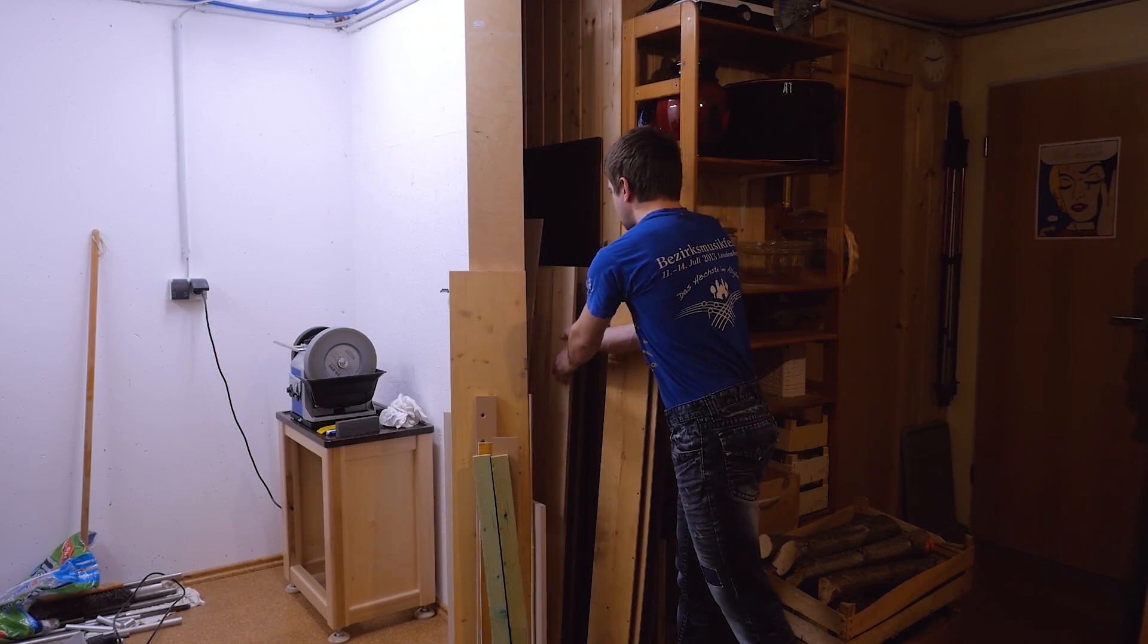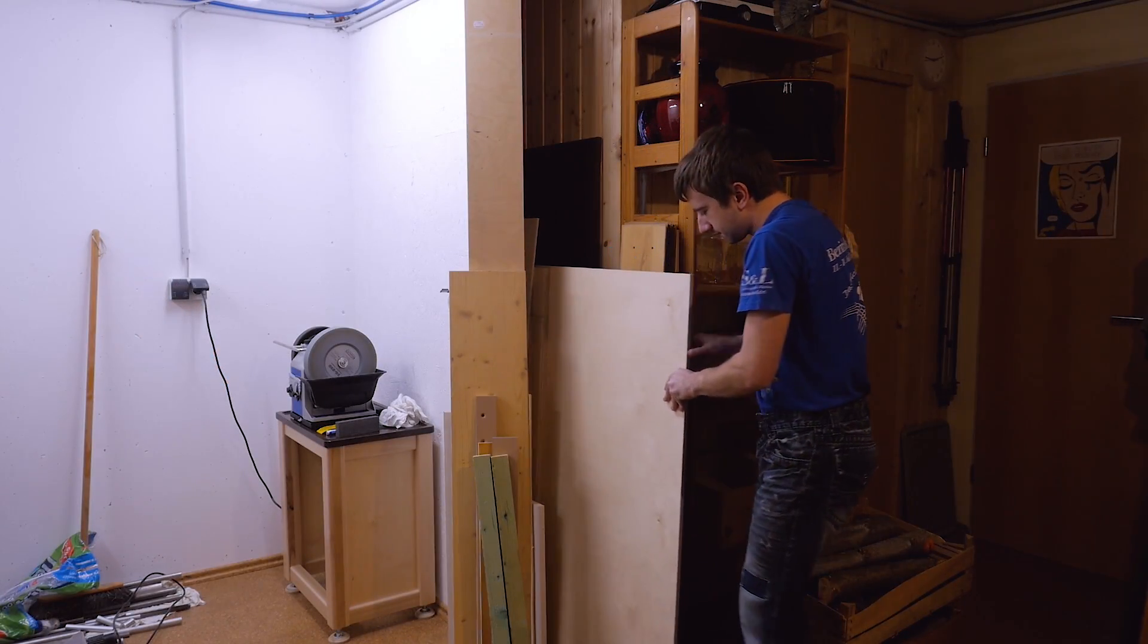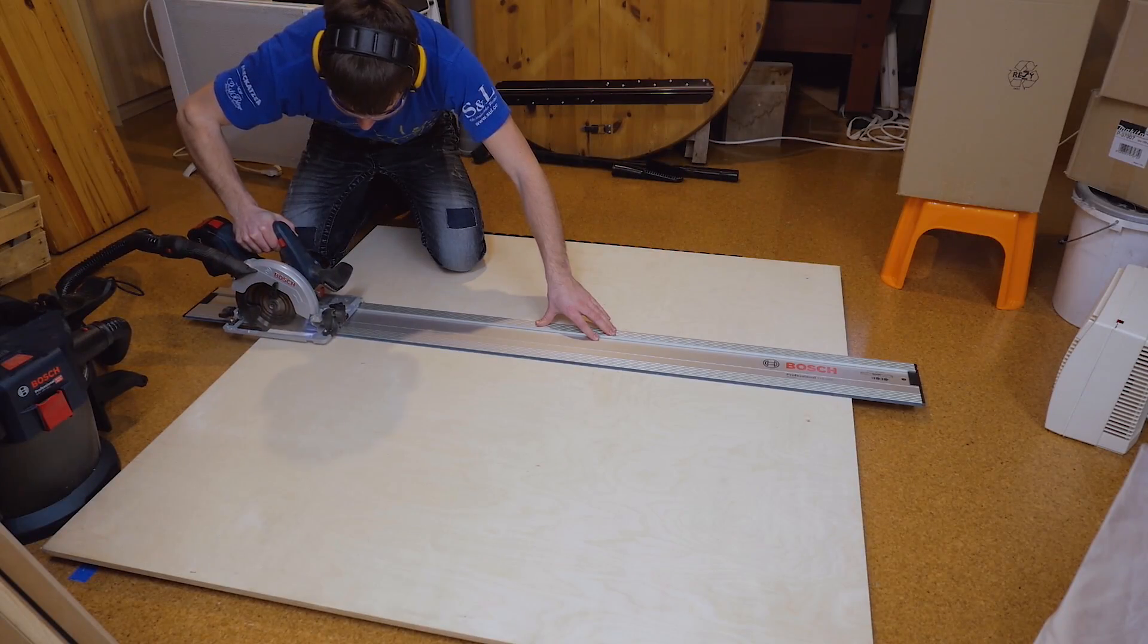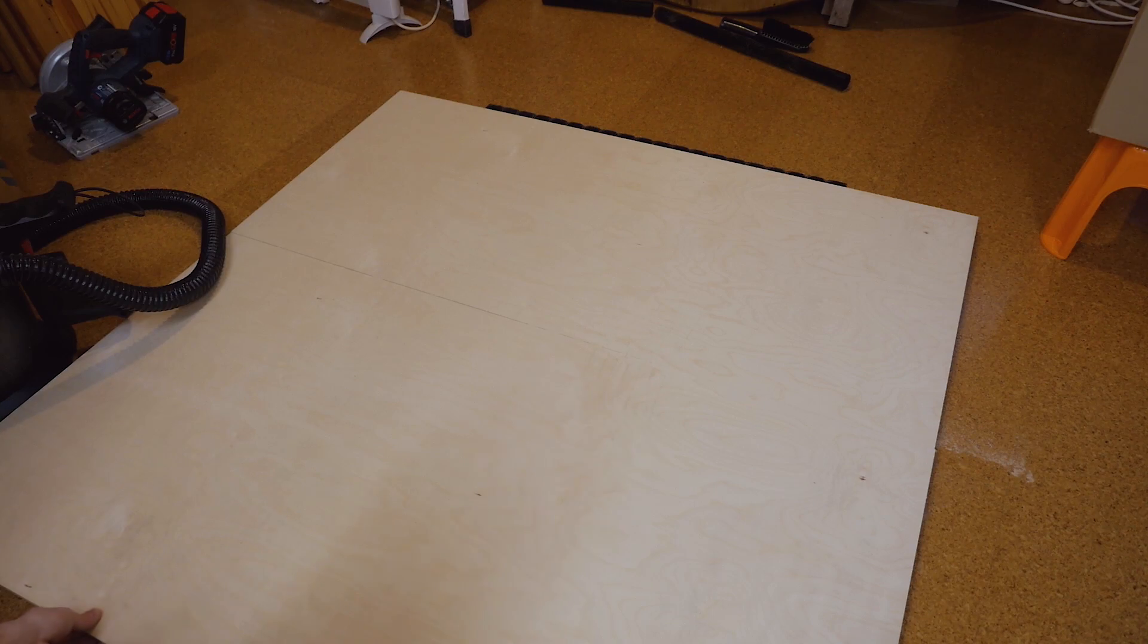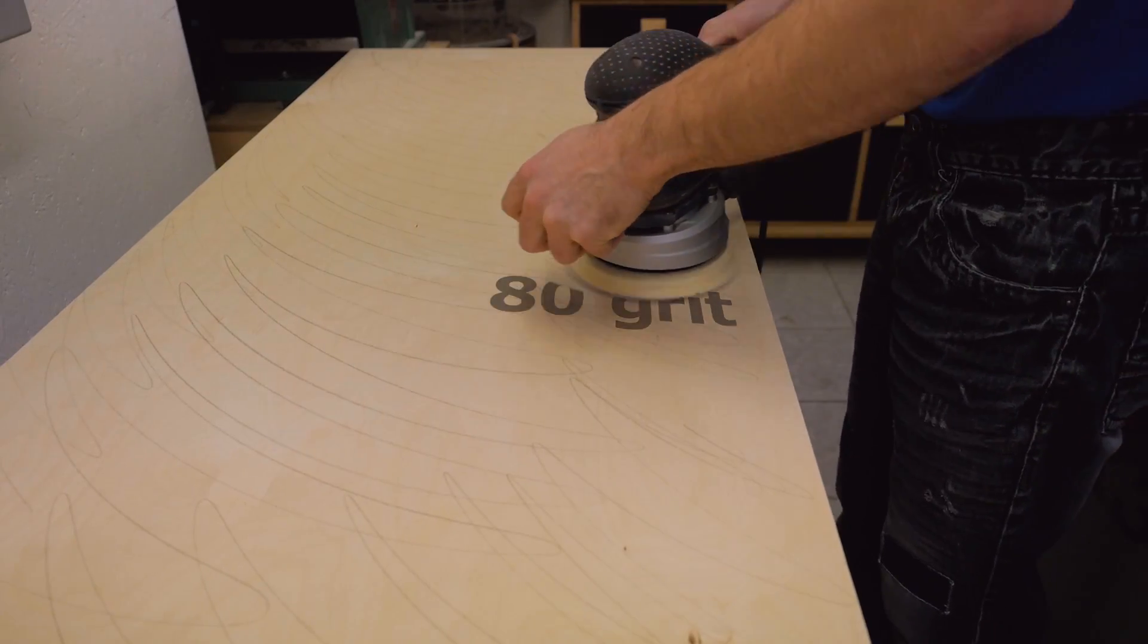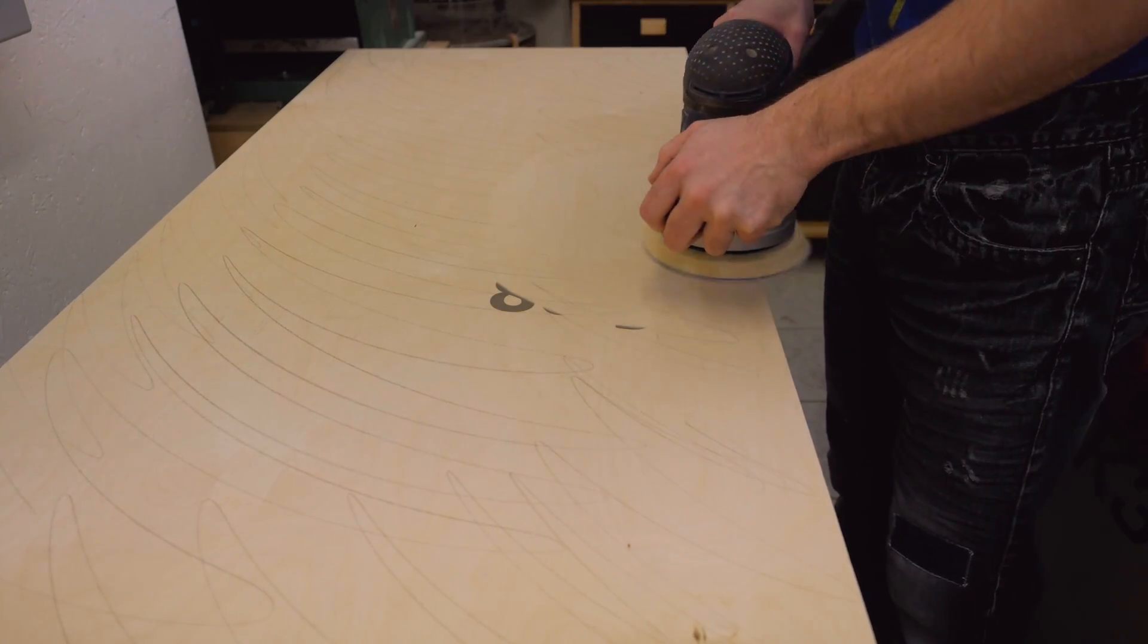For the material I'm using 12 millimeter birch plywood. After cutting a piece off of the big sheet that would be enough for all the parts I need, I pre-sanded it. That will save me a lot of time later on.